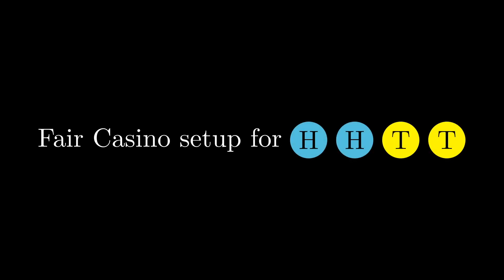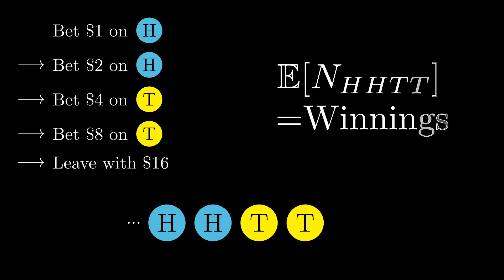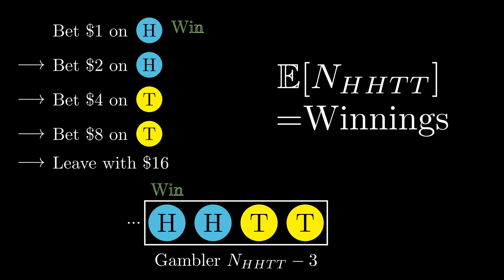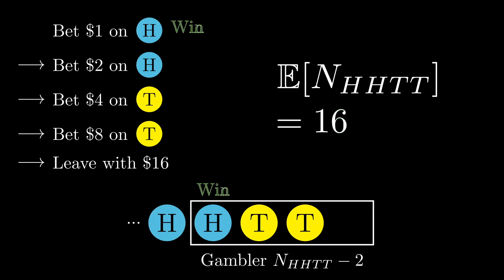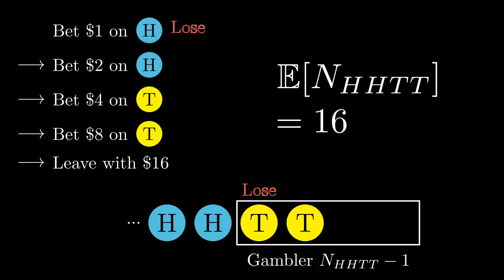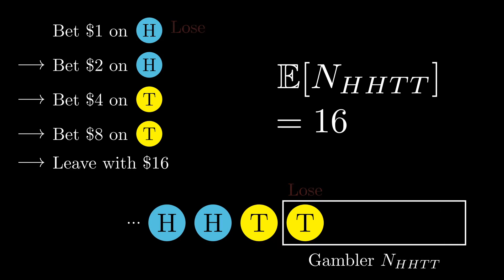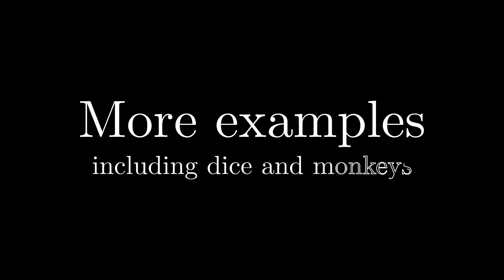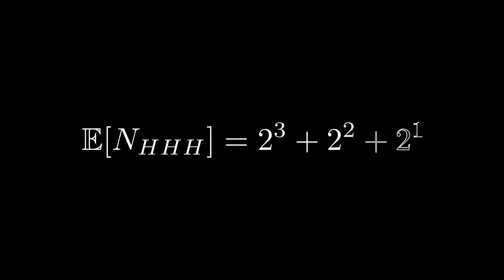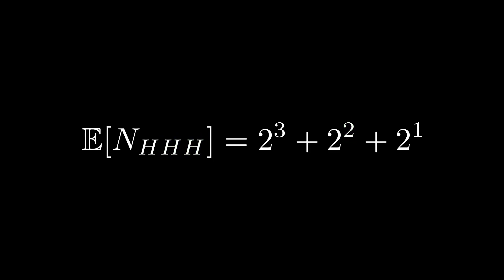A very similar calculation works for heads-heads-tails-tails. Once again we only calculate the winnings from gamblers in the last four coins. As always, one lucky gambler wins all their bets and goes home with $16. But for heads-heads-tails-tails, all the other gamblers lose their bets before the casino closes. So the expected value of N_HHTT is simply 16. Once you get the hang of this, you can easily calculate how long it takes for any target sequence in one line. For example, for heads-heads-heads: it takes 2³ + 2² + 2¹ coin flips on average, because we pay out three gamblers — one who wins all three bets, another who wins two, and another who wins one on the very last heads. The relevant factor is how substrings of the sequence fit into the end of the sequence itself.